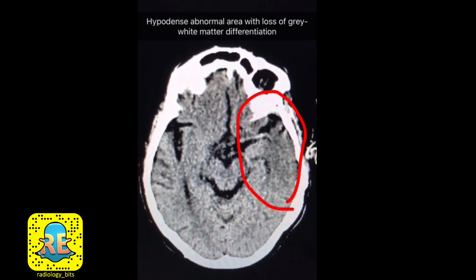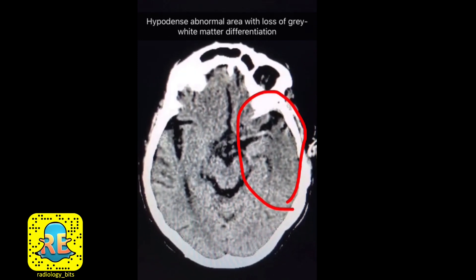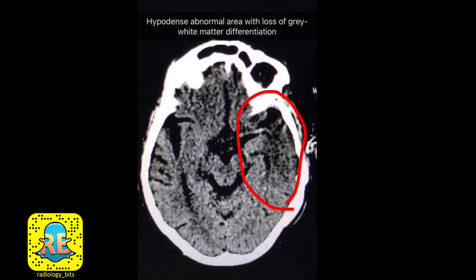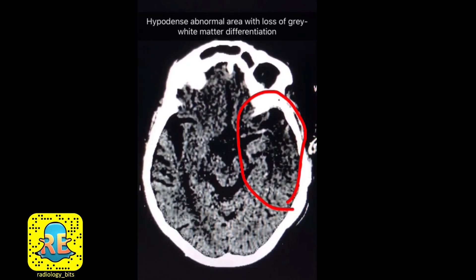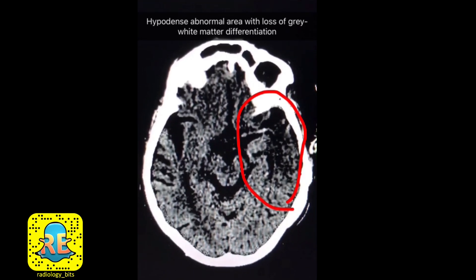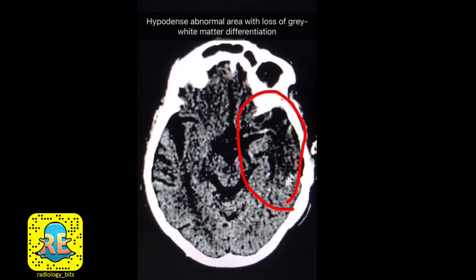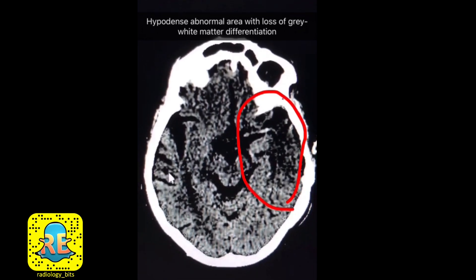To emphasize the previous point and see this hypodense area better, let's change to a darker window. Although it looks noisy, you can easily identify the very obvious hypodensity in the left temporal lobe compared to the well-differentiated gray and white matter on the right side.